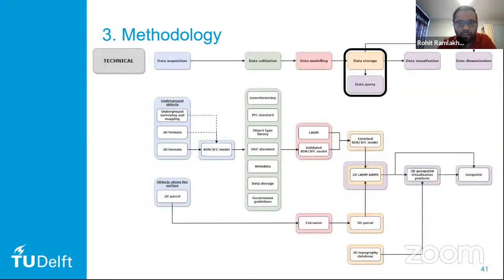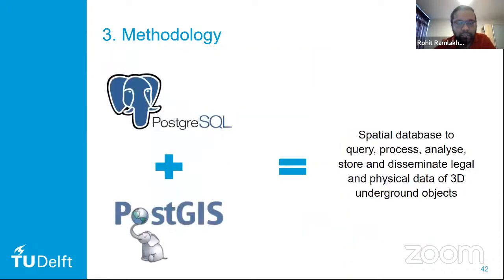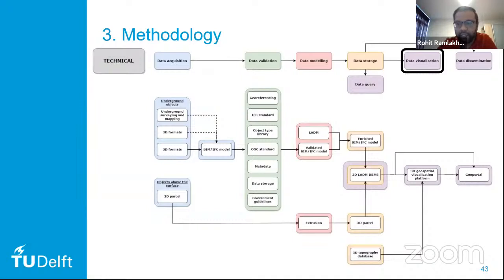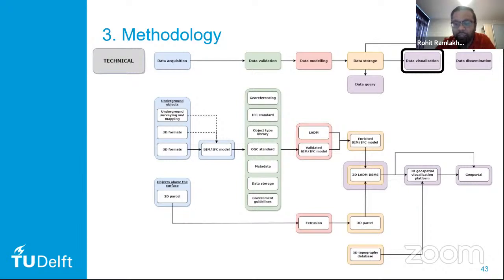Then follows data storage and query, where a relational database PostgreSQL will be extended with the PostGIS database extension to query, process, analyze, store, and disseminate legal and physical data of 3D underground objects. The 2D parcels will also be extruded to 3D parcels and inserted into the database. Then follows data visualization, in which the whole integrated model — the enriched BIM IFC model with legal data as well as 3D parcels — will be visualized in CESIUM, an open source geospatial visualization platform. A 3D topography database from the 3D city model, CityGML, can also be used as reference objects.